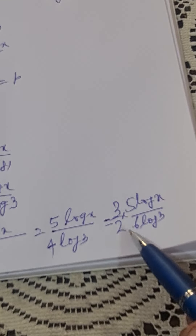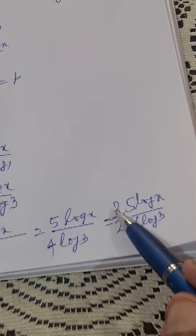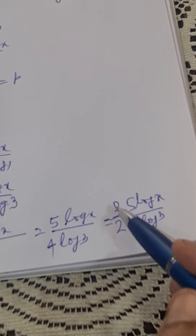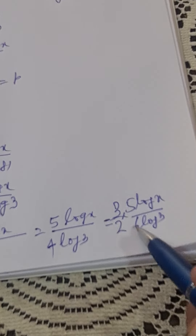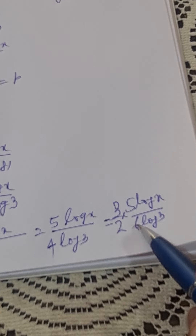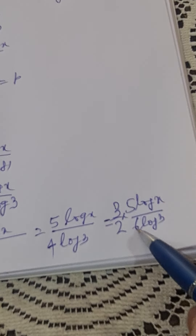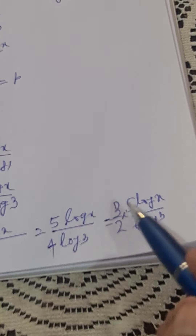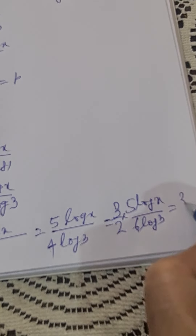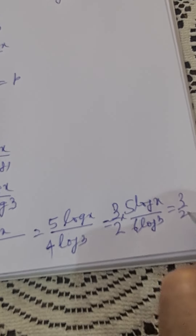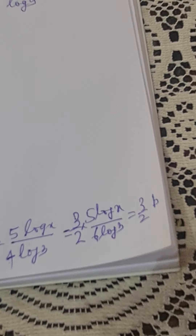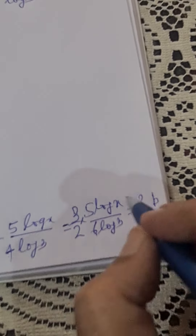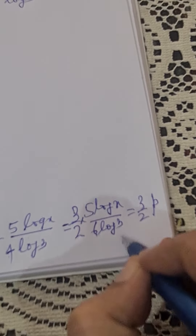We can manipulate this further. We have 5 log x divided by 4 log 3. Comparing with 5 log x divided by 6 log 3 equals p, the 3 will cancel with the 2, giving us 3/2 times p. So the answer is 3p/2. This is how we find the value.